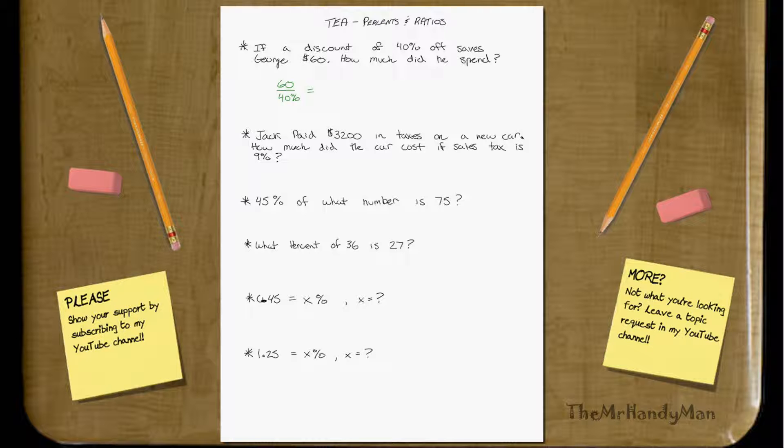Now, how much he spent is not 100%. He didn't spend 100%. He spent 60% because he had a 40% off discount. So he actually only spent 60%. We just need to find out what number would correspond with that.